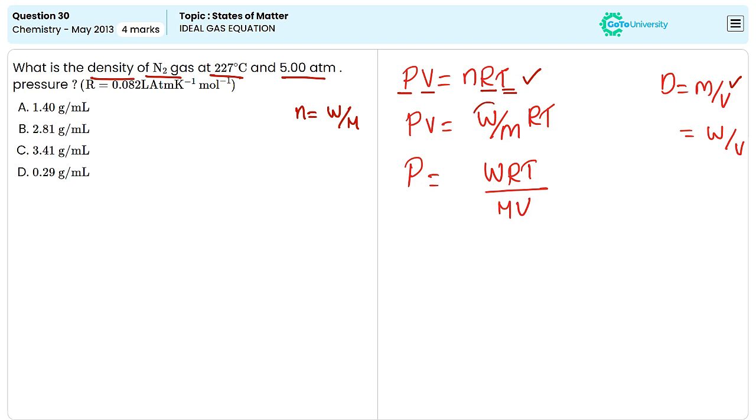Here, the mass is denoted by the letter W. So, we can write density D is equal to W divided by V.